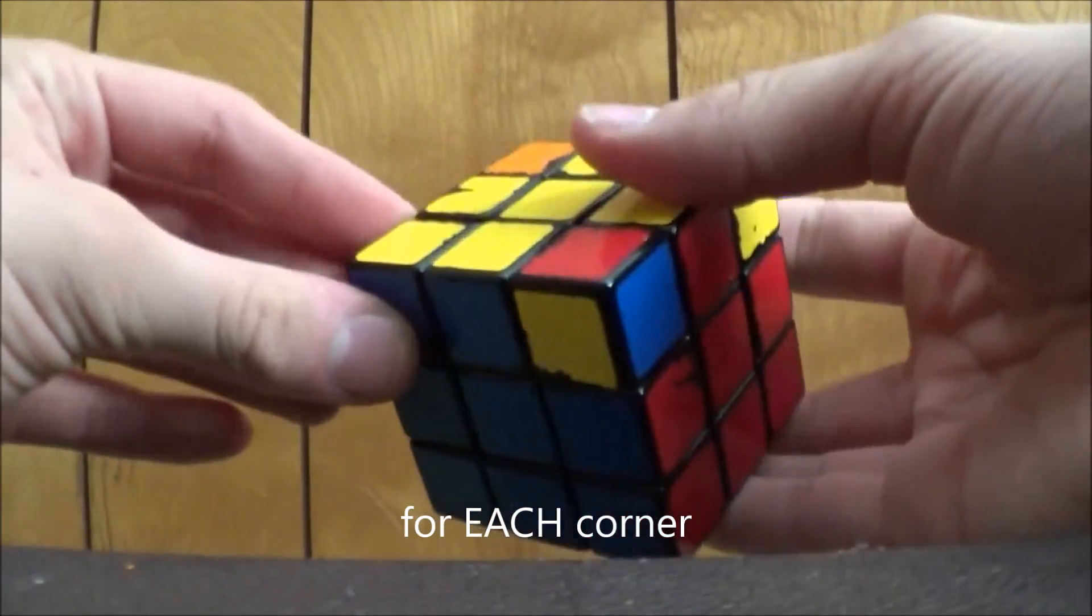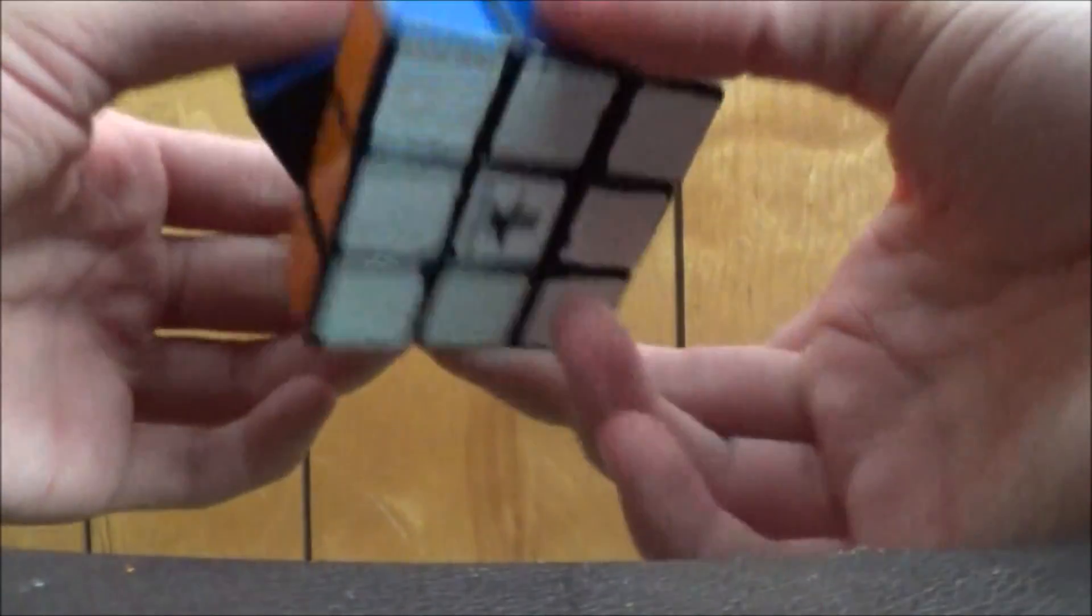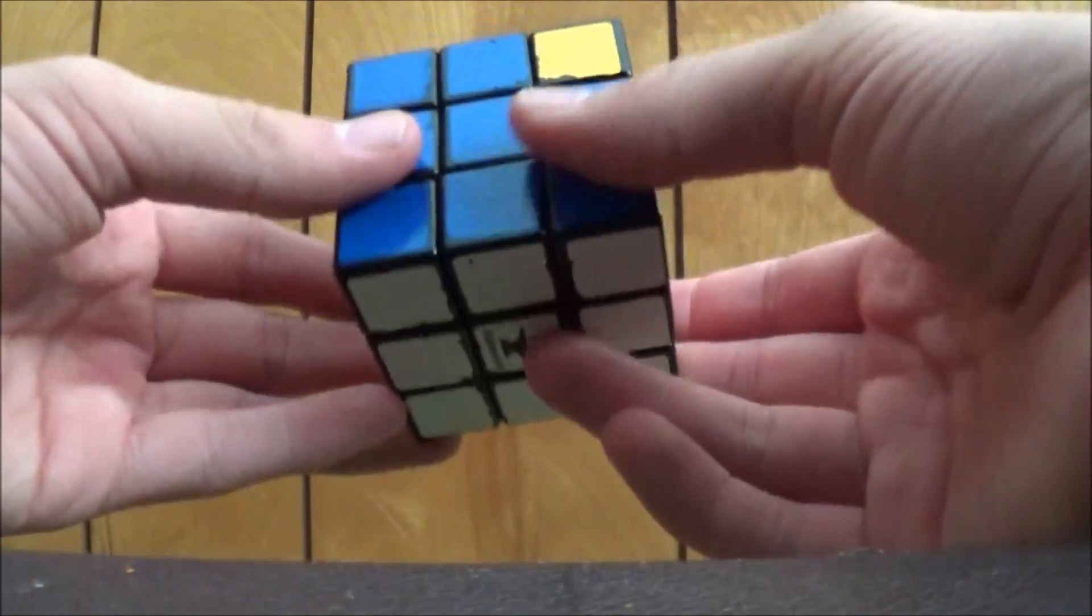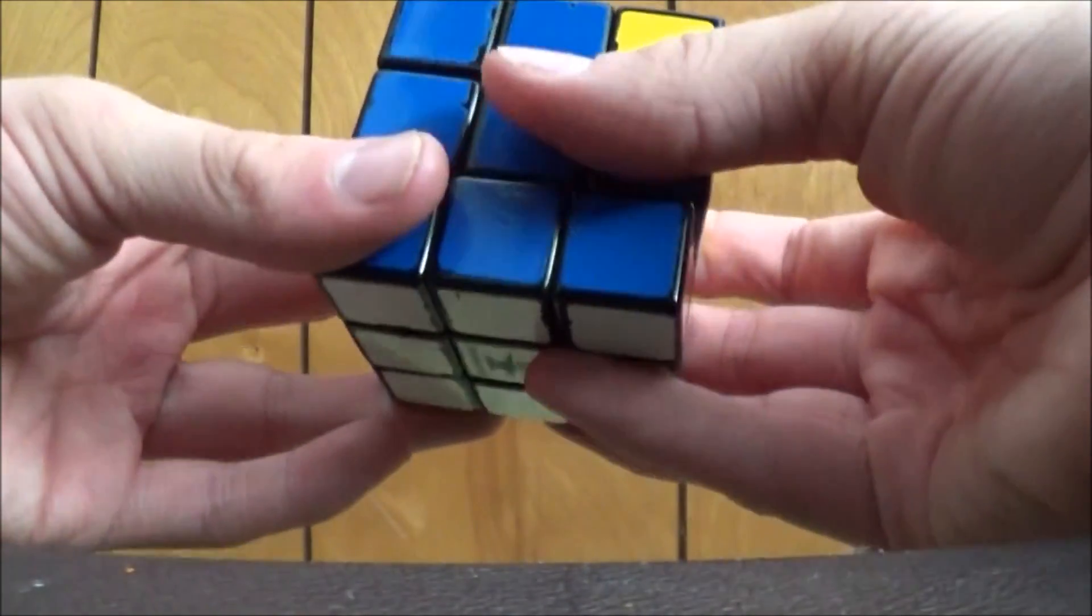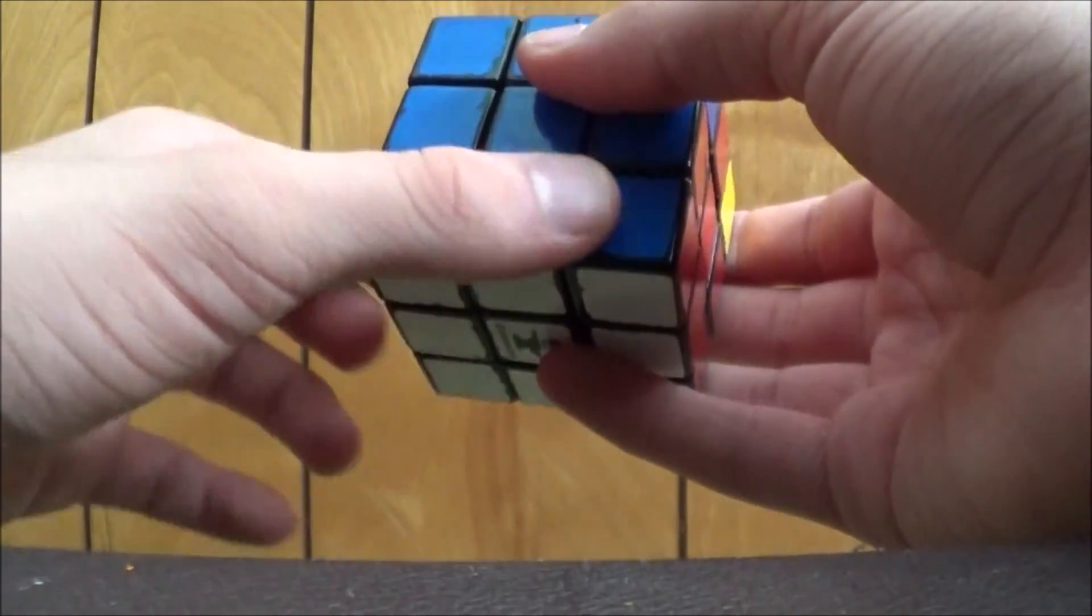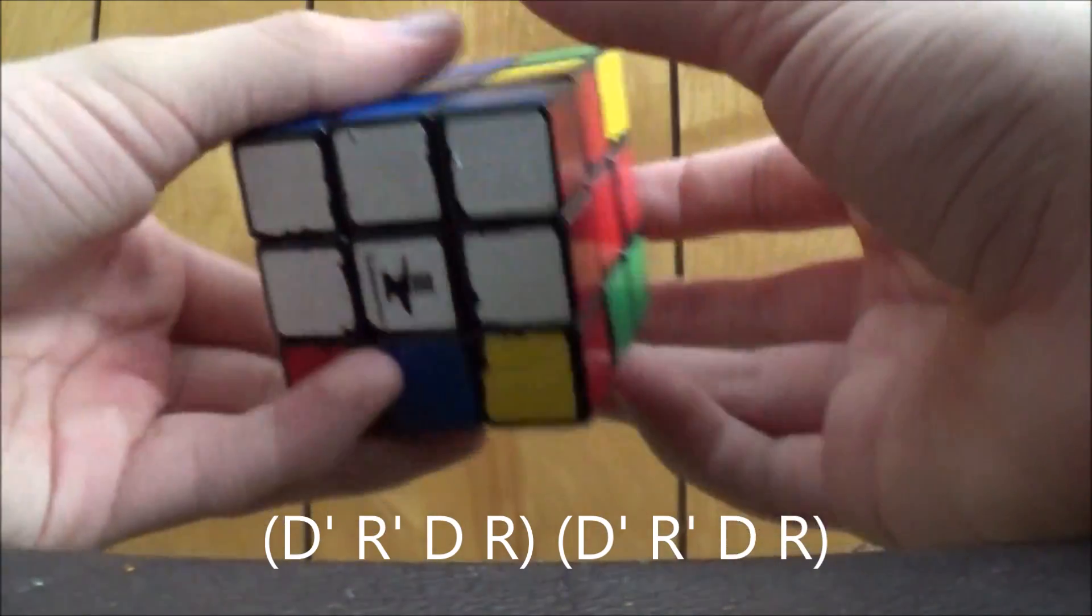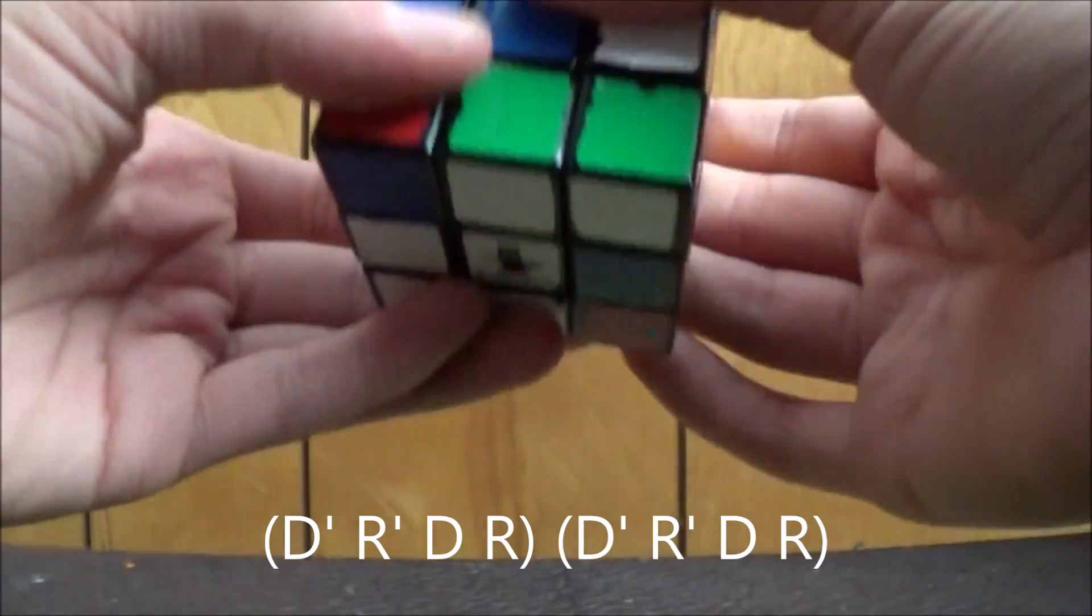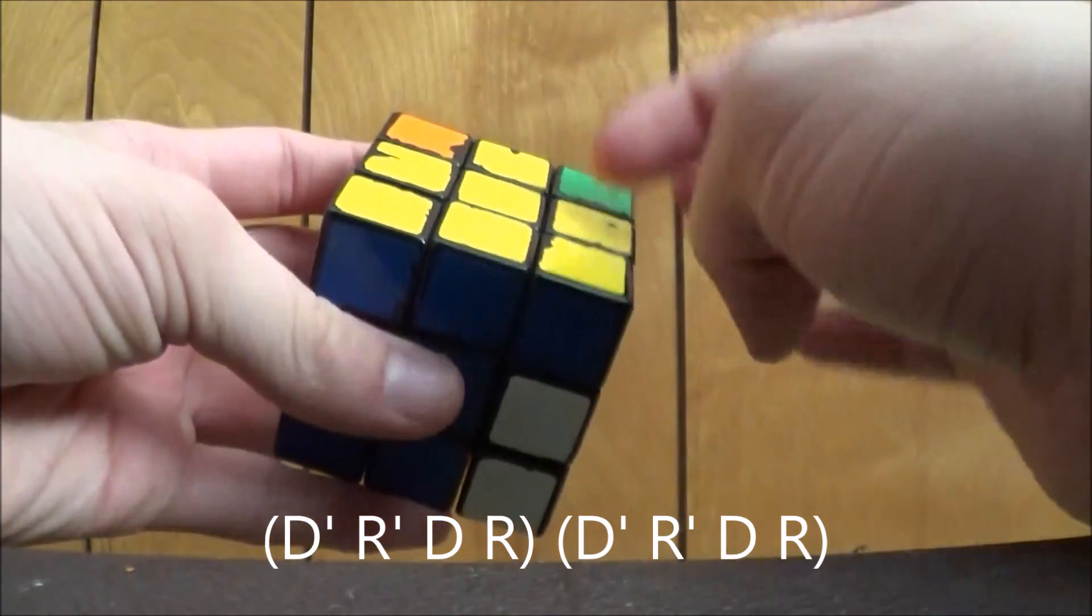But doing it backwards, you only have to do it twice. Just be careful of how you're doing the D prime turns, the D and the D prime turns. Because if you do it wrong, like I did just a second ago, you will scramble up your cube. Just be careful. It goes like this: D prime, R prime, D, R, D prime, R prime, D, R. And it's up on the top.